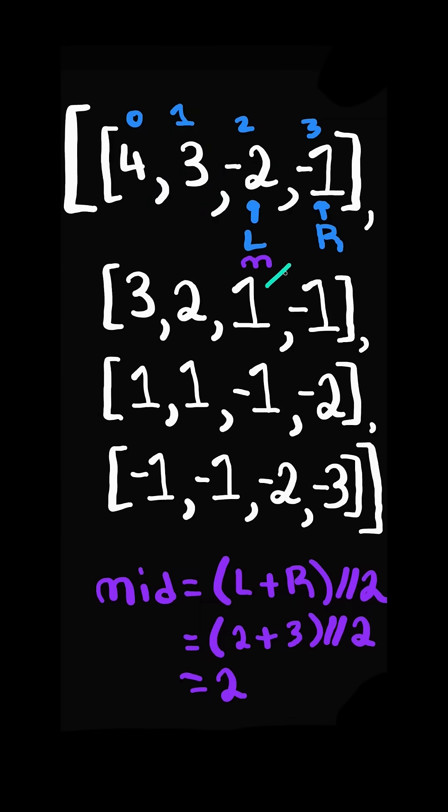We calculate the midpoint. If mid points to a negative, this could potentially be the first negative. So we move r to be equal to mid and we continue.